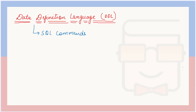Starting with what is DDL or data definition language in SQL: DDL commands are a part of SQL. They are SQL commands that are used for either creating a relation schema — relation means the tables that are present in a relational database — or modifying that relational schema, or even deleting the relations that are present in the relational database.